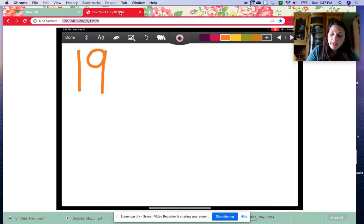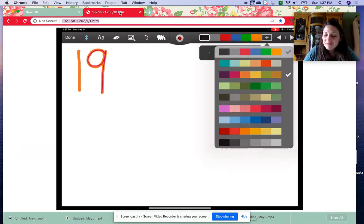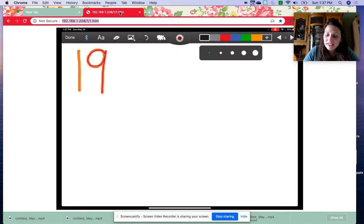It is 19, one nine. When we make that nine, it's a start at the top and it's a circle around. When we get back to the top, we go straight down. Okay, good. Let's make 19 counters. But before I do that, I want to make sure my counters are nice and neat.